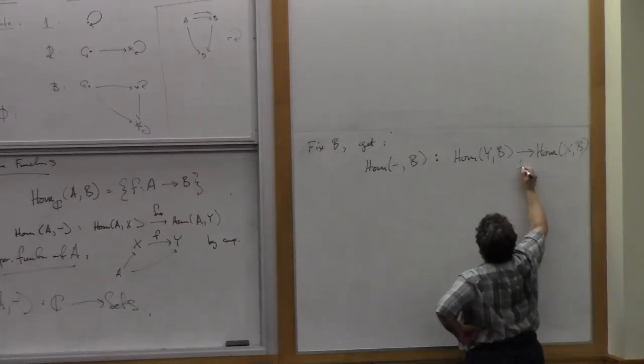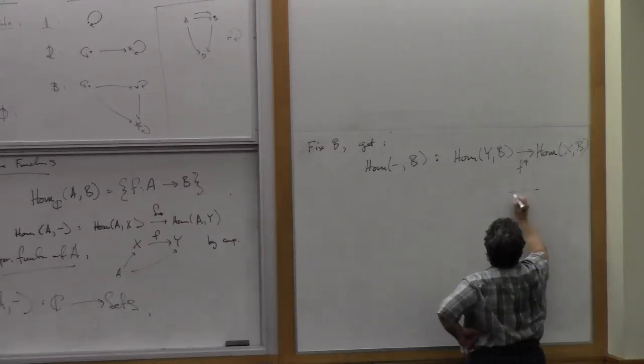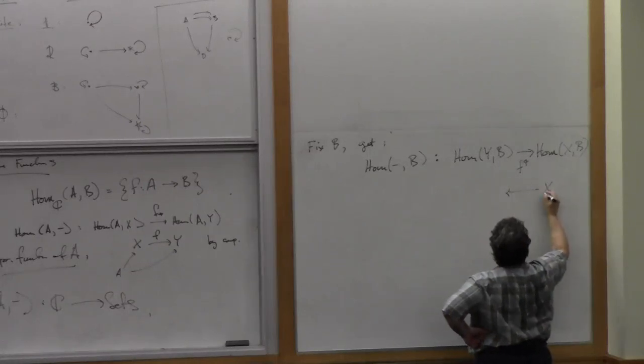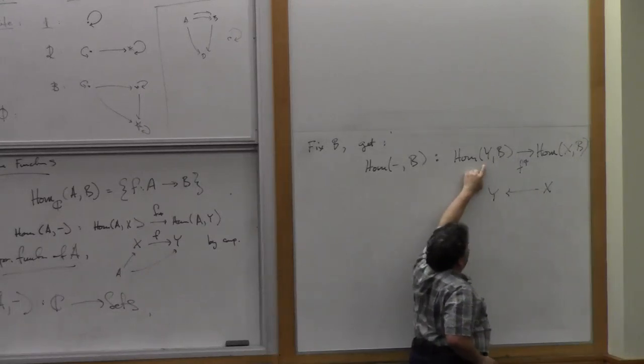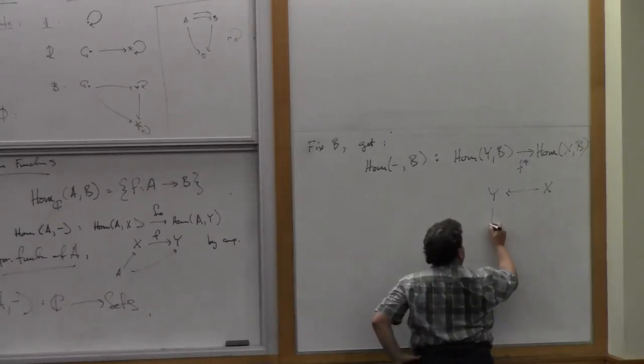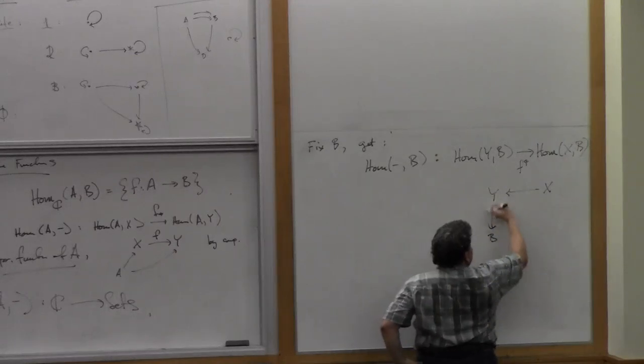That's a map, F upper star. It comes from a map going this way, from X to Y, because this was maps from Y into B, so I take something here and I precompose.